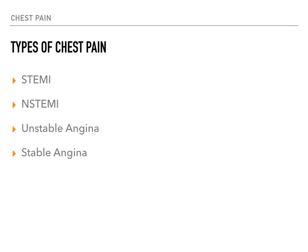There are a few types of chest pain. There's the STEMI and the NSTEMI, and then there's stable and unstable angina. Of course, there are more types of chest pain that are not on this slide, but for the purposes of this discussion, we're going to do a really focused review.